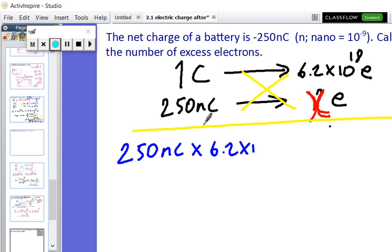...one coulomb times x electrons. So let's make this x red. Good. So what we can easily do here is obviously cancelling out the electrons...